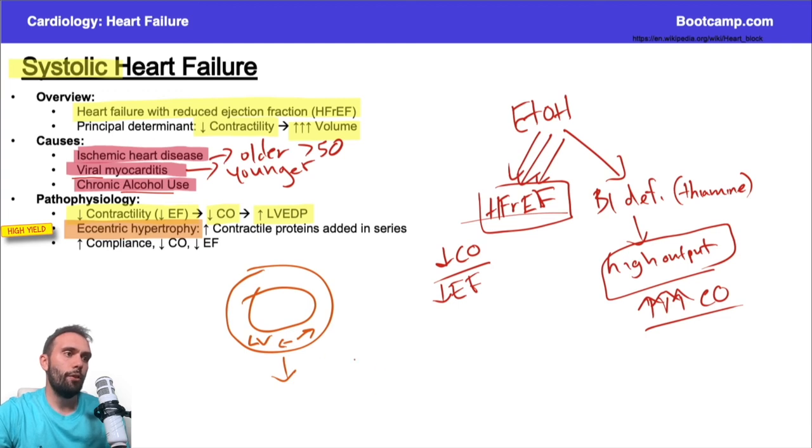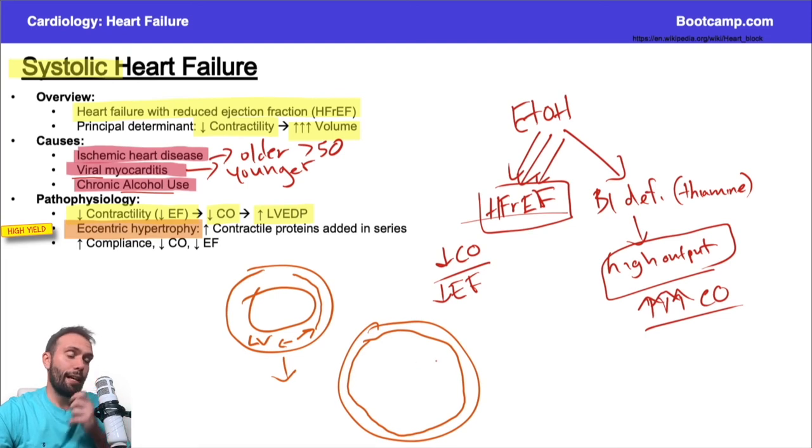In systolic heart failure, we're adding the sarcomeres in the latter way. I'm adding them kind of longitudinally around here. I'm adding more sarcomeres. So what happens here is I'm actually going to get a larger ventricular cavity size.